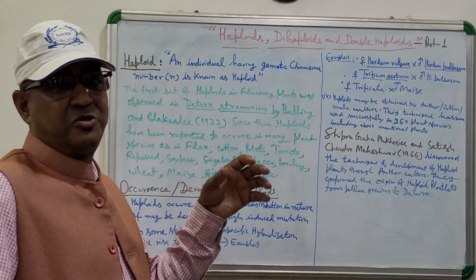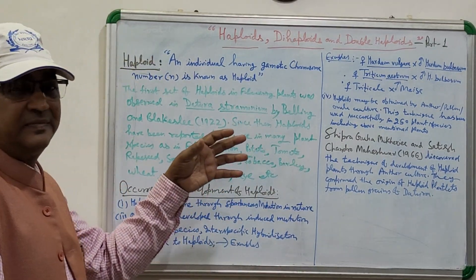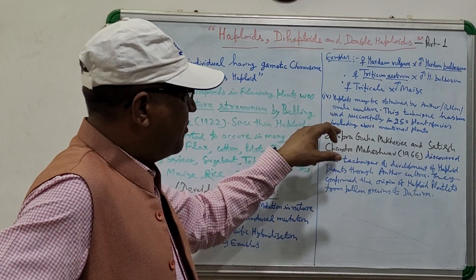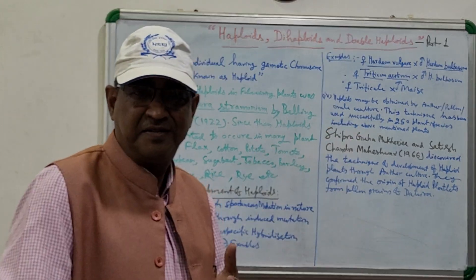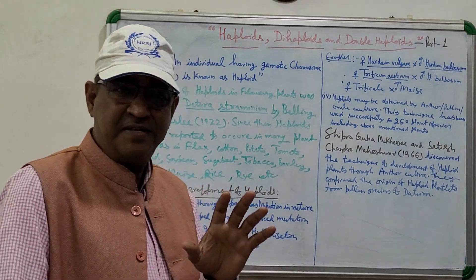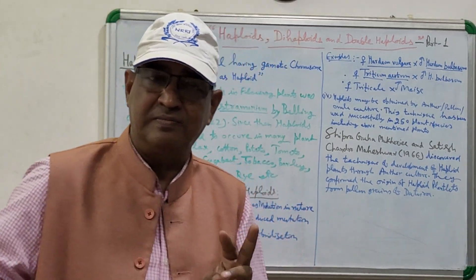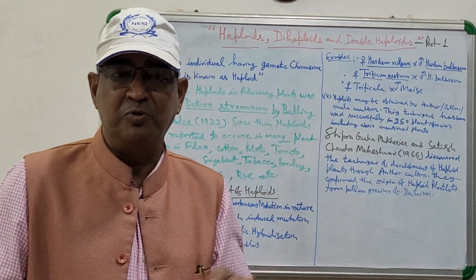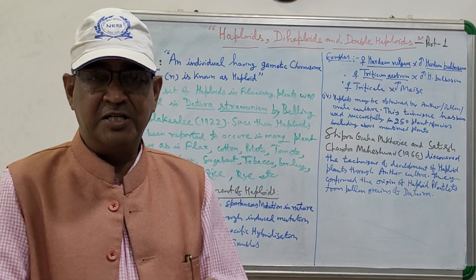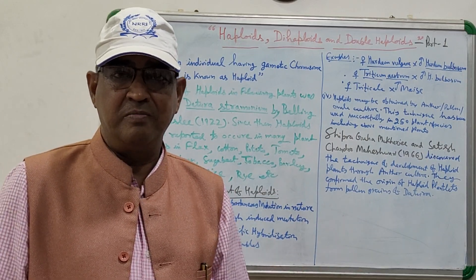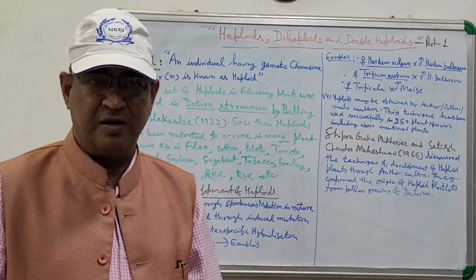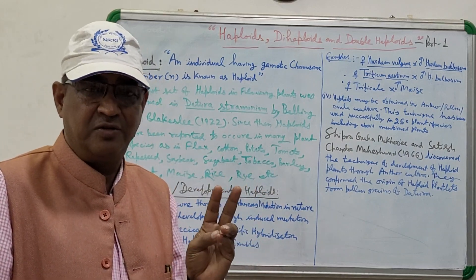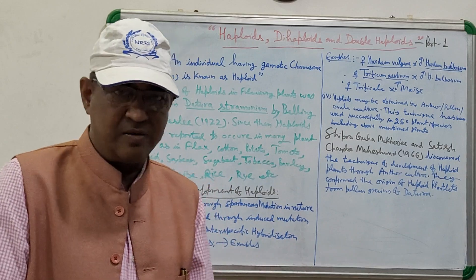What you are doing in the field can be said to be in vivo. So haploids may be obtained through spontaneous mutation — whatever abnormal plant you are observing because of a very rare spontaneous mutation. Any type of mutation may occur, and one possibility is that the plant may be haploid. So you observe it, try to see whether it is haploid, and that can be protected.